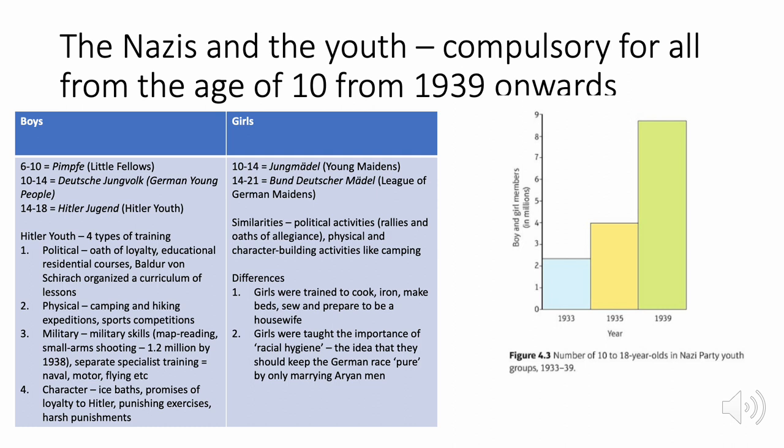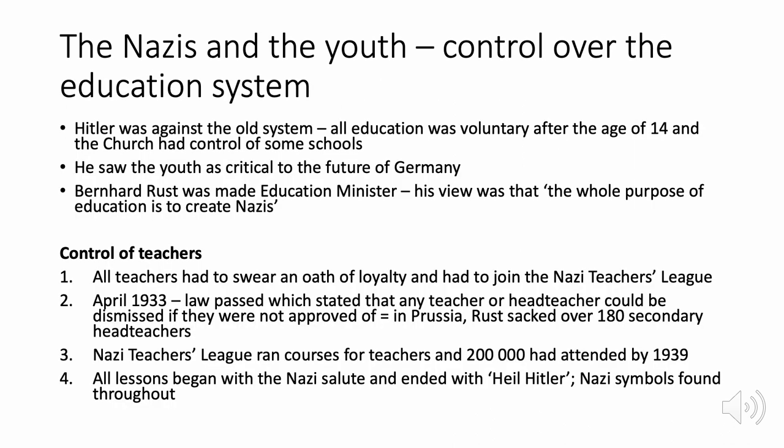Hitler also controlled the education system. He opposed the old system where education was voluntary after 14 and the Church controlled some schools. He appointed Bernhard Rust as Education Minister, whose view was that the whole purpose of education was to create Nazis. Teachers had to join the Nazi Teachers' League and swear an oath of loyalty — those who didn't were fired. In Prussia, Rust sacked over 180 headteachers in 1933. By 1939, 200,000 teachers had attended Nazi training courses. All lessons began and ended with the Nazi salute and 'Heil Hitler.'